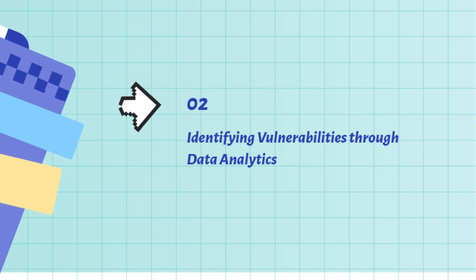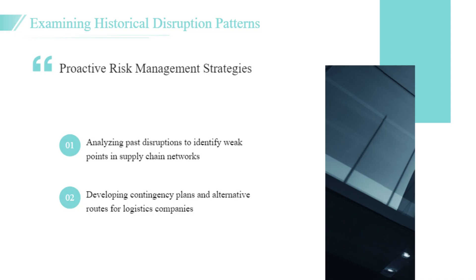Identifying vulnerabilities through data analytics. Data analytics serves as a powerful tool for identifying vulnerabilities within supply chain networks. By examining historical disruption patterns, organizations can pinpoint weak points that may compromise their operations, allowing for proactive risk management strategies. For example, a logistics company analyzed past disruptions due to weather events and identified specific routes that were consistently affected, enabling them to develop contingency plans and alternative routes. This analytical approach enhances risk mitigation strategies and prepares businesses for various scenarios, reducing the impact of potential disruptions.